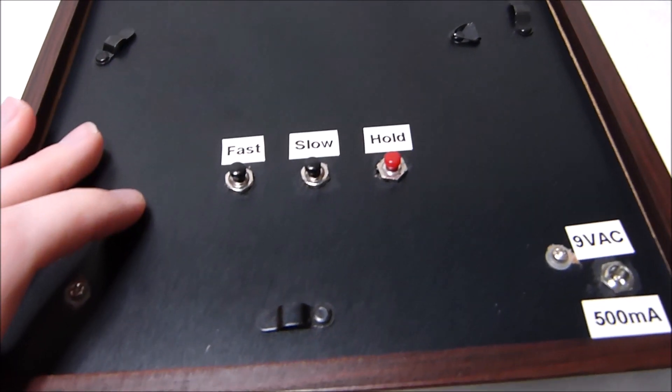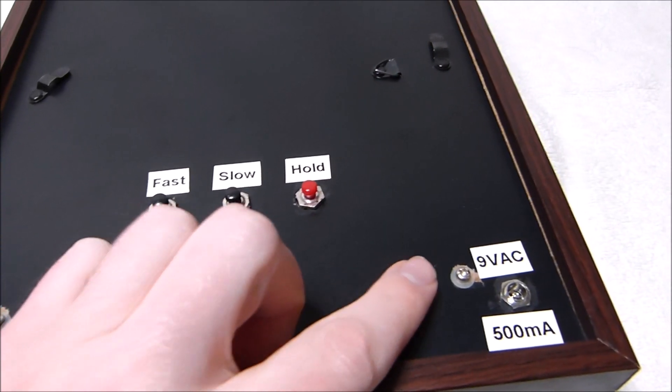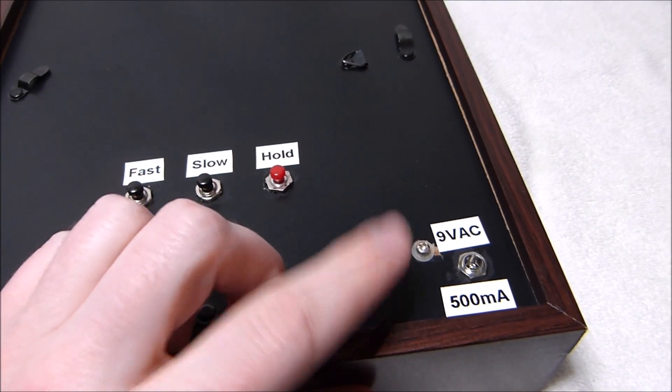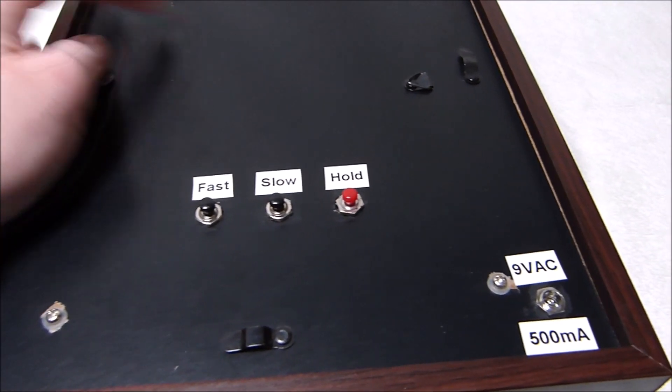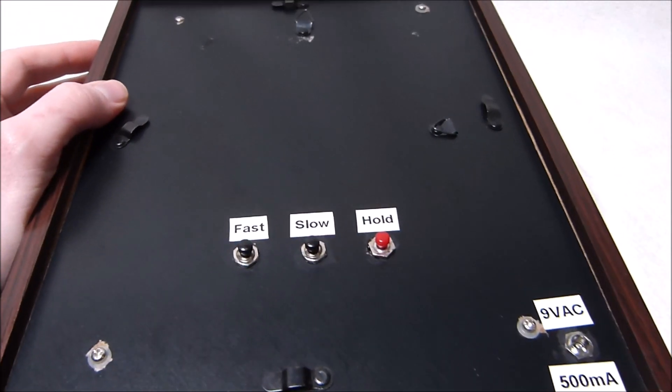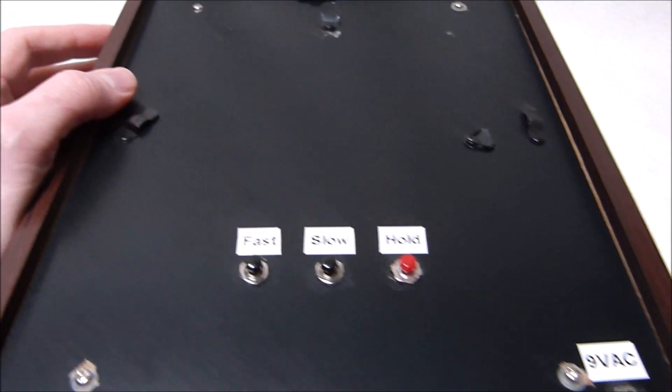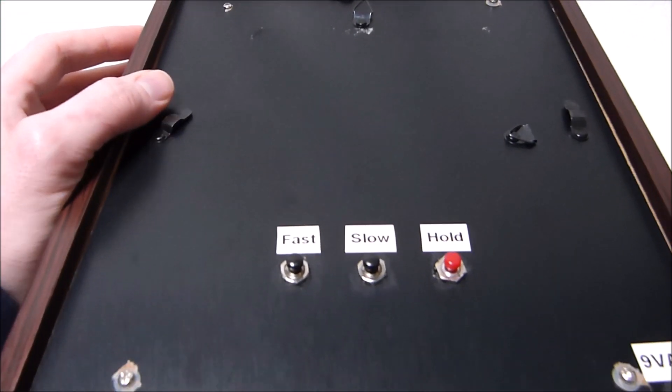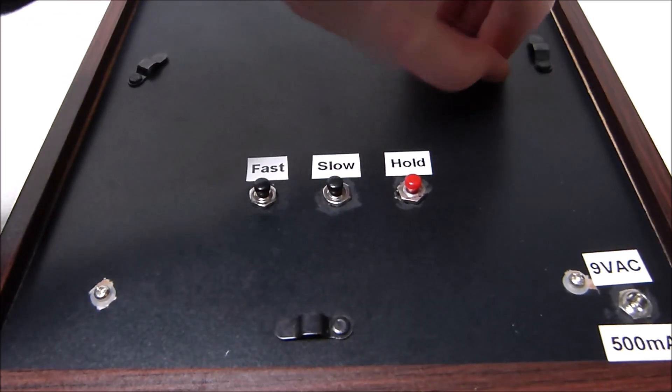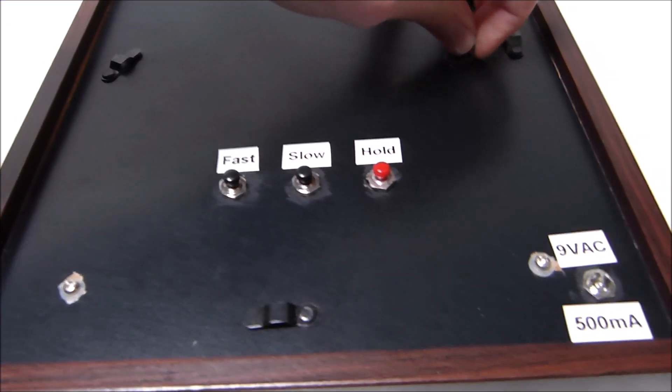There's three controls: fast, slow and hold. And I'm running it off of 9 volts AC at 500 milliamps. I don't know exactly what adapter would have come with this originally, but I'm using the same sort of adapter on this that I've used on other clocks that use the same main IC, or ones in the same family I should say.